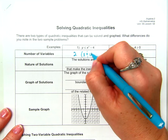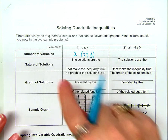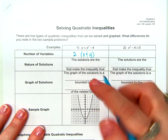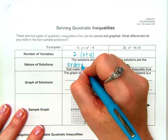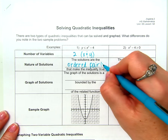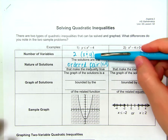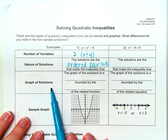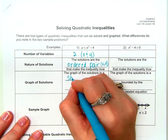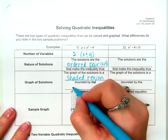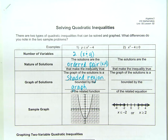X and Y. The nature of the solutions of an inequality that has two variables — the solutions are the ordered pairs that make the inequality true. An ordered pair looks like (X, Y). It makes sense that we have two variables and our answers have to look like (X, Y). The graph of the solution is a shaded region bounded by the graph of the related function. And here is a sample graph.